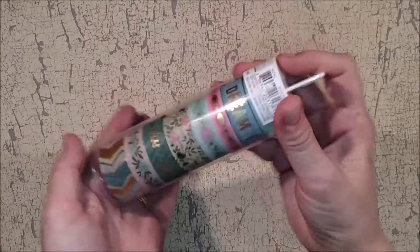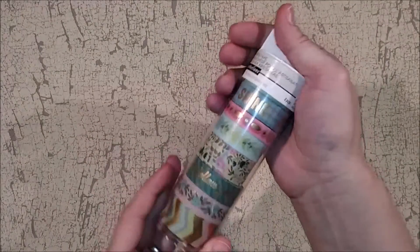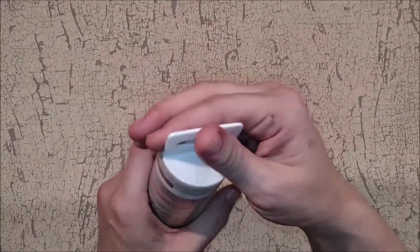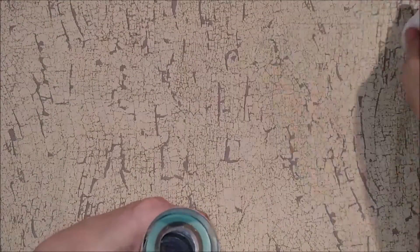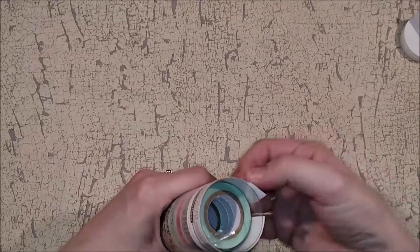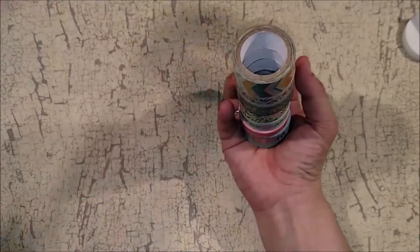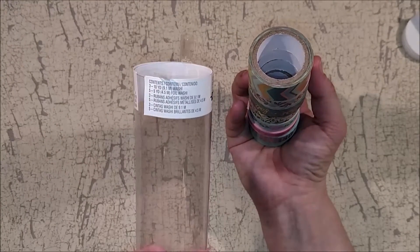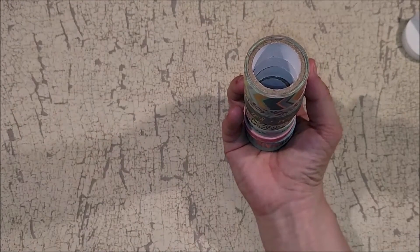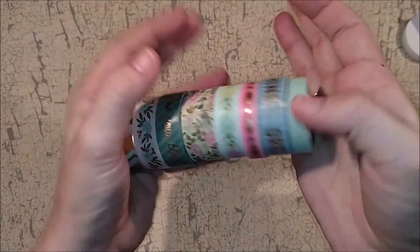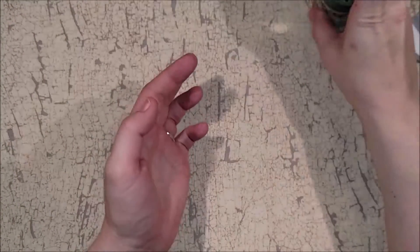Alright. And then this was a gift from a friend that went to Michaels. Saw this. And said that it reminded her of me. Which, how sweet is that? So, this was a tube of Recollections washi. And there is what it looks like in its entirety. And we'll go through this one roll at a time.